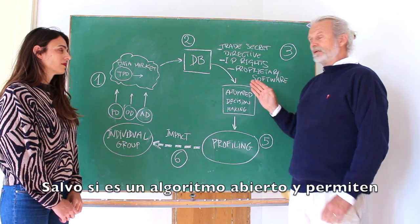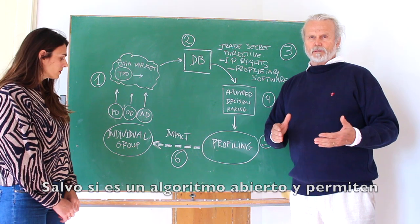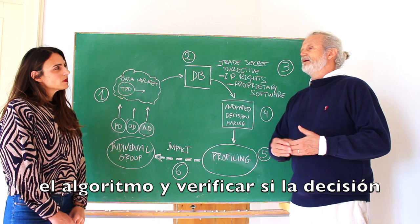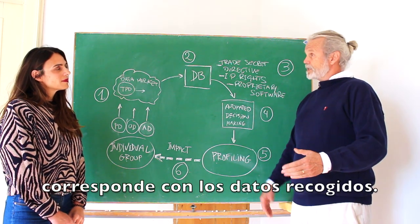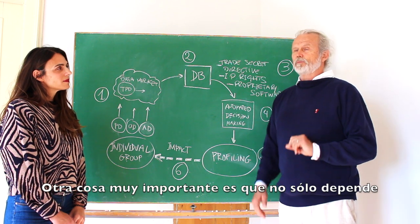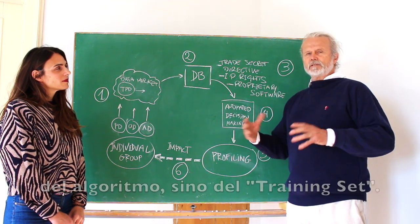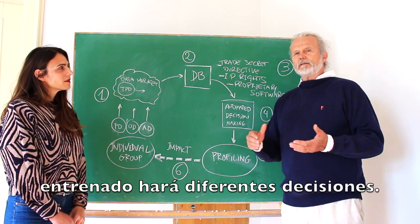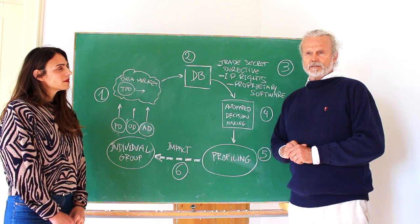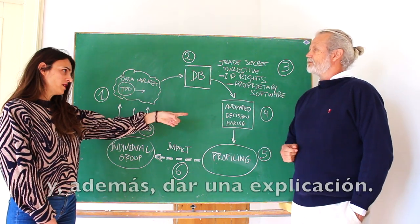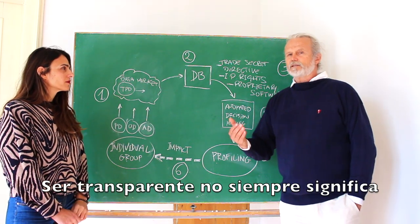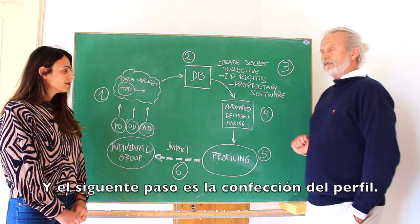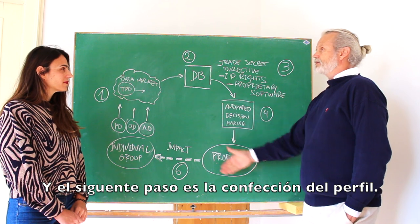Except if they were open about it, then we could have independent experts come in and actually test the algorithms and verify whether they would reach the same decision given the same input. Another important thing is that it's not just the algorithm — it's also the training set. Depending on how these algorithms are trained, they will give different answers. That's the reason why there is a difference between transparency and explainability. Transparency doesn't necessarily mean that you can explain how things are working. But out of these automated decisions come profiles.